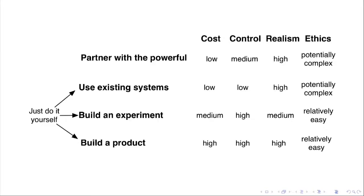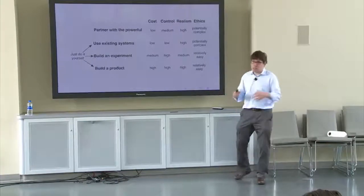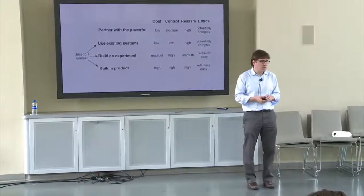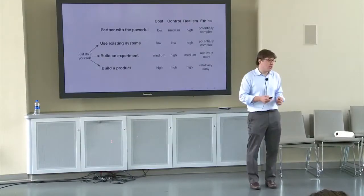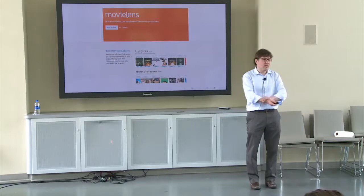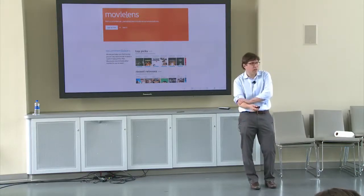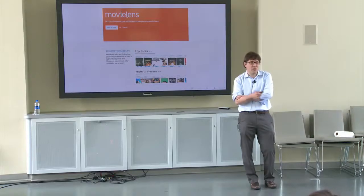So this is a very, very difficult strategy to actually take. The control that you get is very high because you're the boss. And the realism that you get is very high because you have people doing this not because they want to be in an experiment, because they want to get movie recommendations. And ethics, I think, are relatively easy because you're in total control. So this is the build a product strategy. I think it's very difficult. But to me, it seems really exciting because if you can do it, which I think is very difficult, you can really do stuff that would be hard to do any other way.